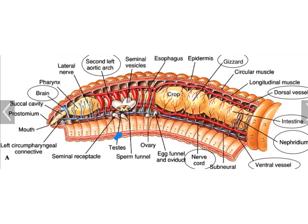As we review the earthworm, on the skin it has several light-receptive structures that allow the earthworm to sense light — essentially to allow it to burrow away from the light. It also has various chemical receptors throughout the skin that allow it to taste its surroundings, and this would also allow the earthworm to have a sense of touch as well.